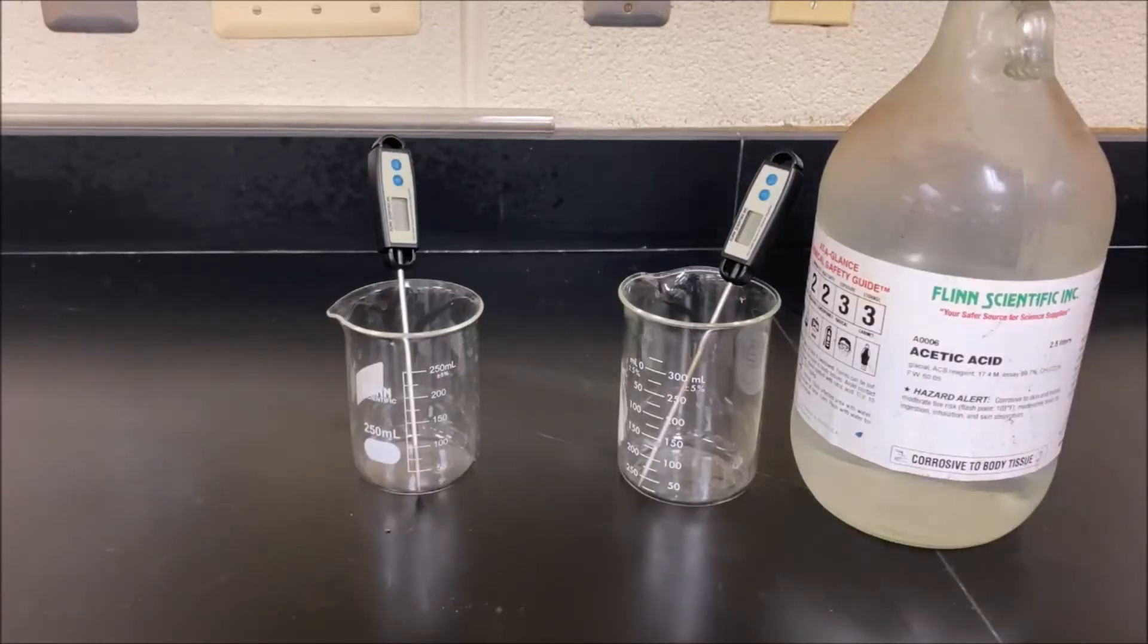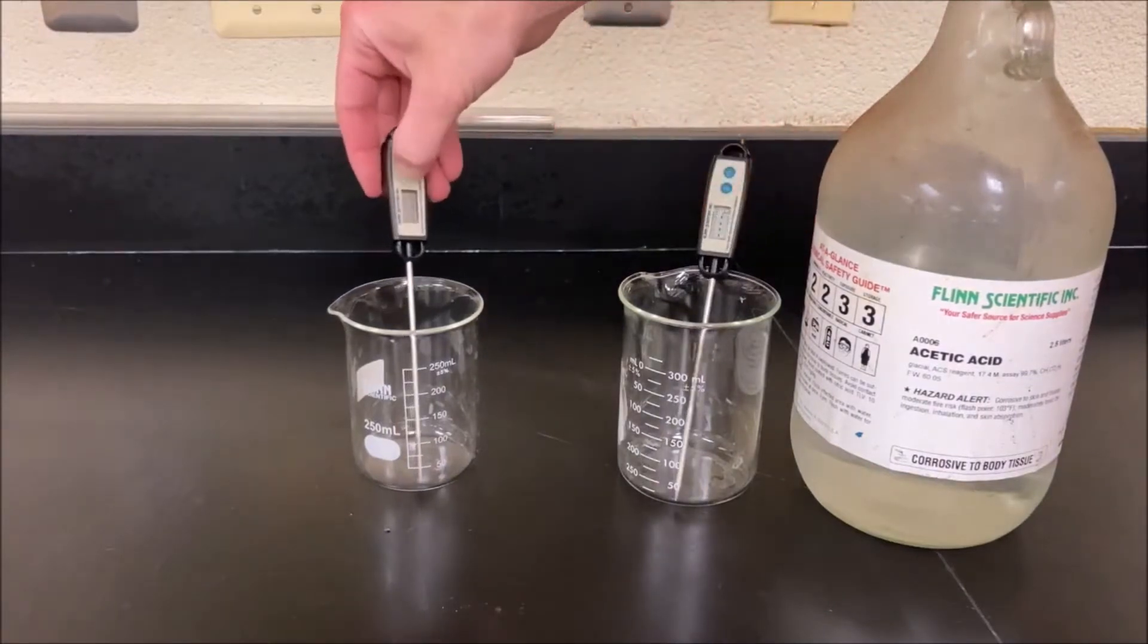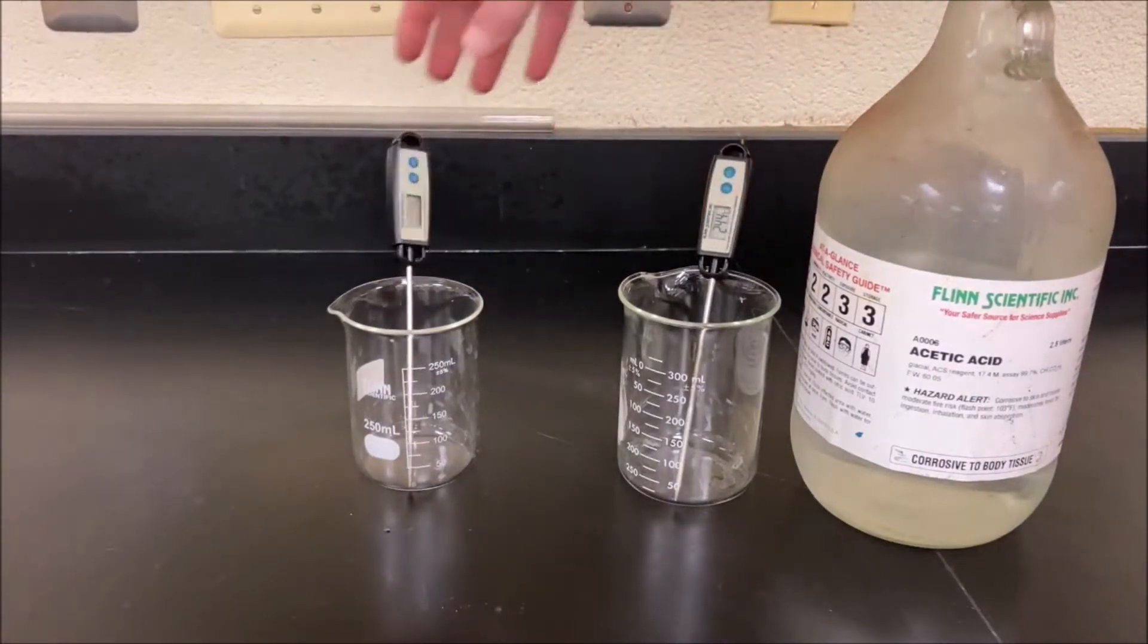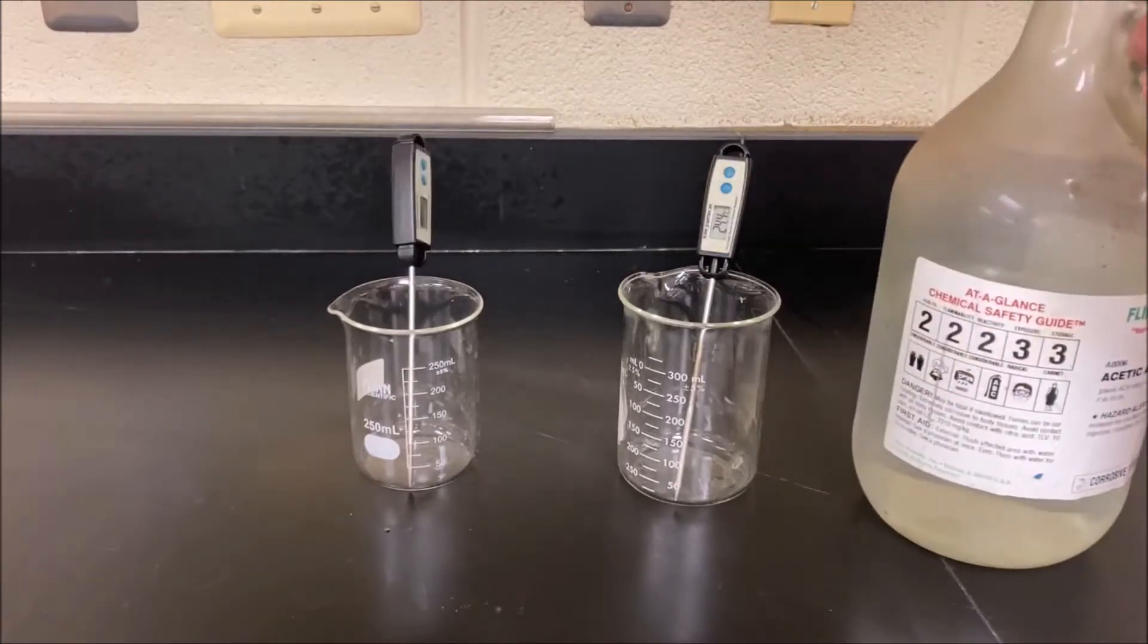Today we're going to work with some glacial acetic acid. It says here this is 99.7 percent, and the freezing point of glacial acetic acid is just over 60 degrees Fahrenheit and just over 19 degrees Celsius.